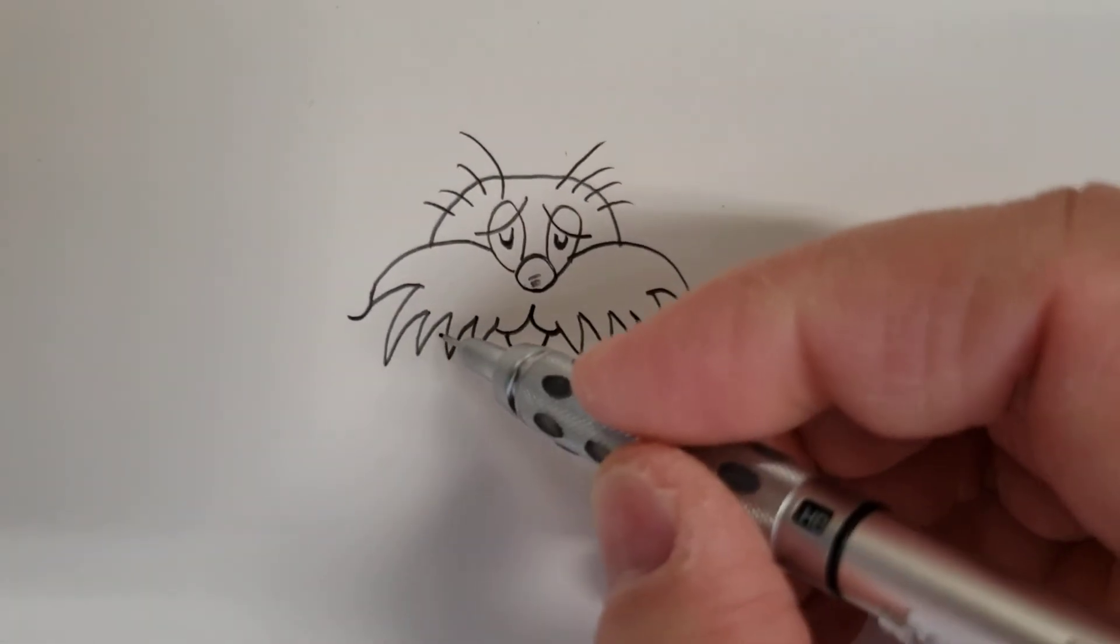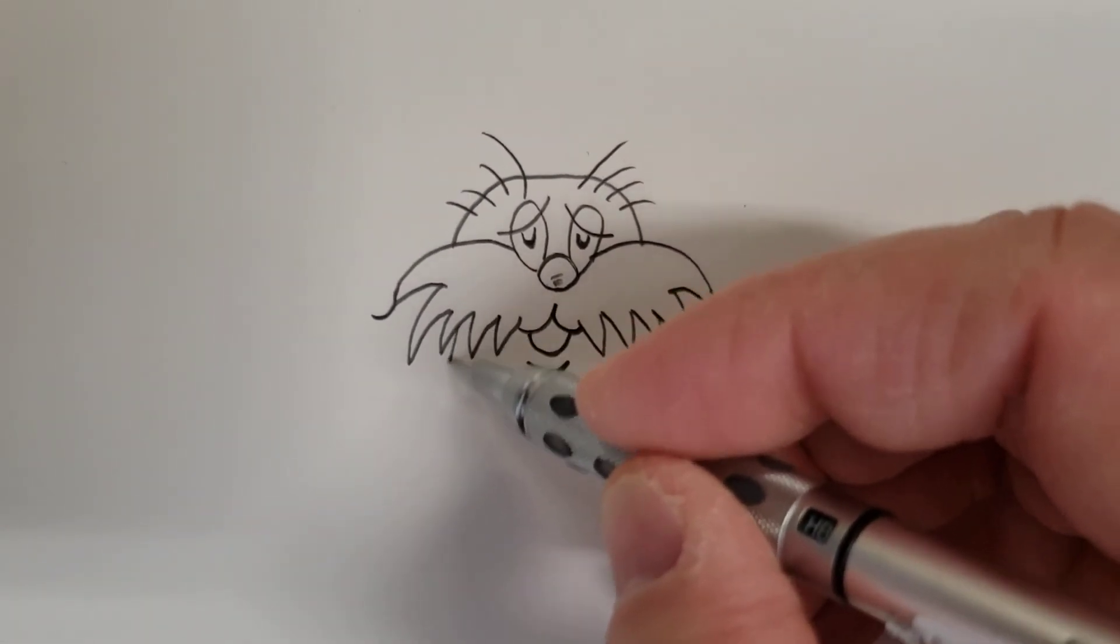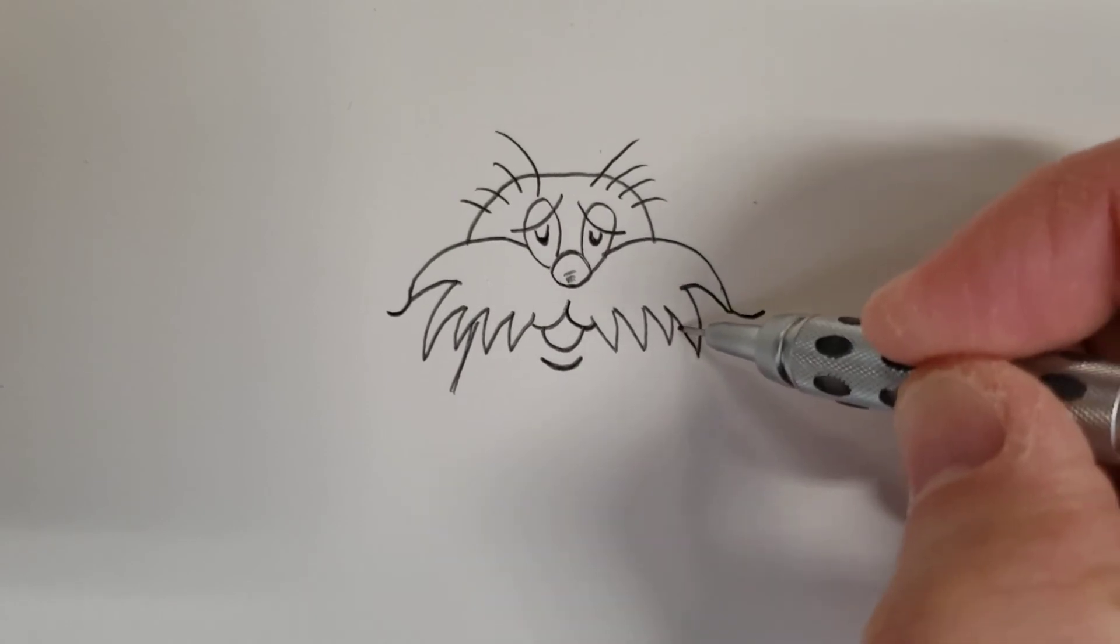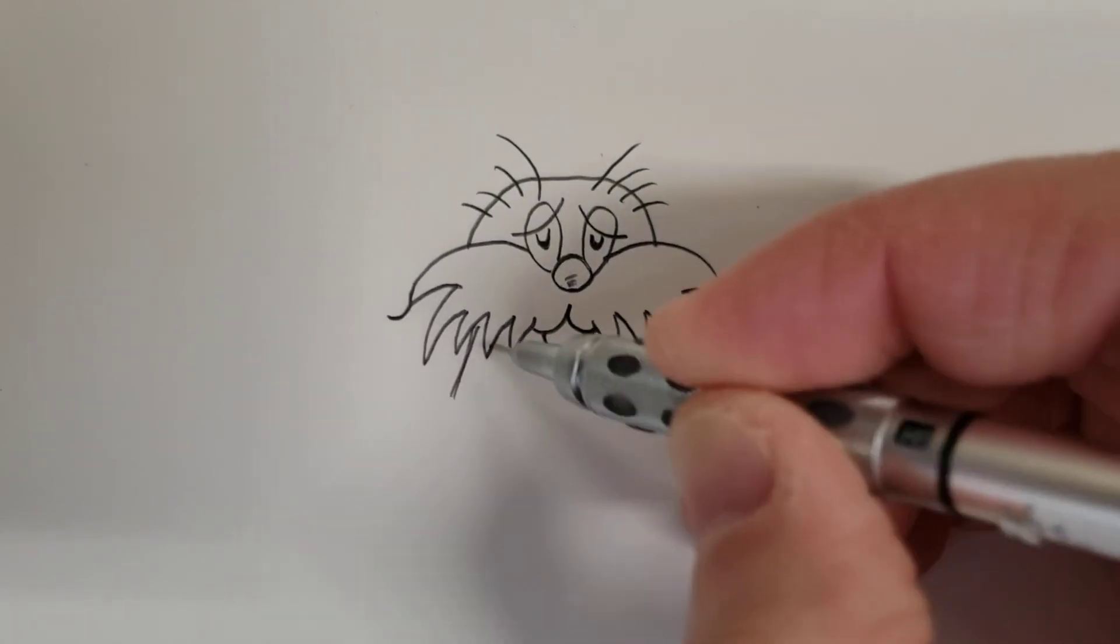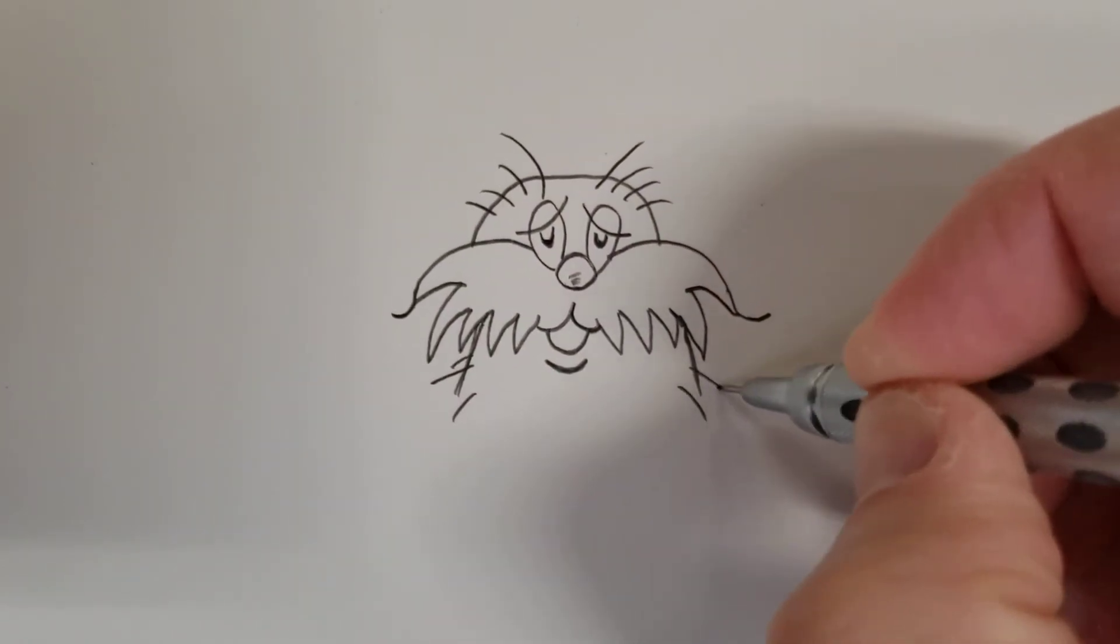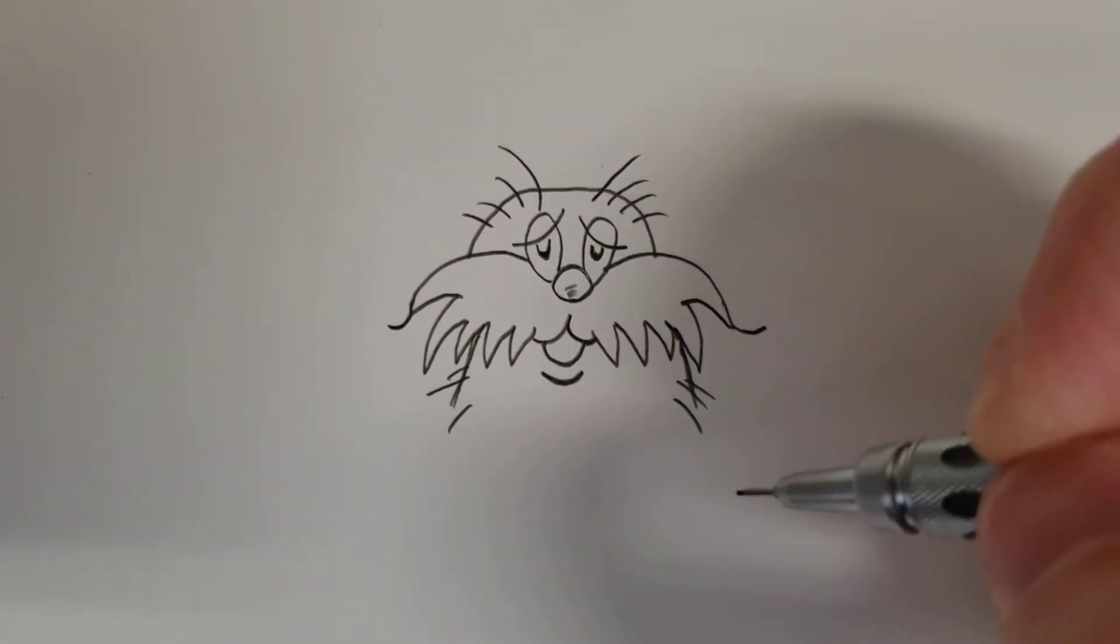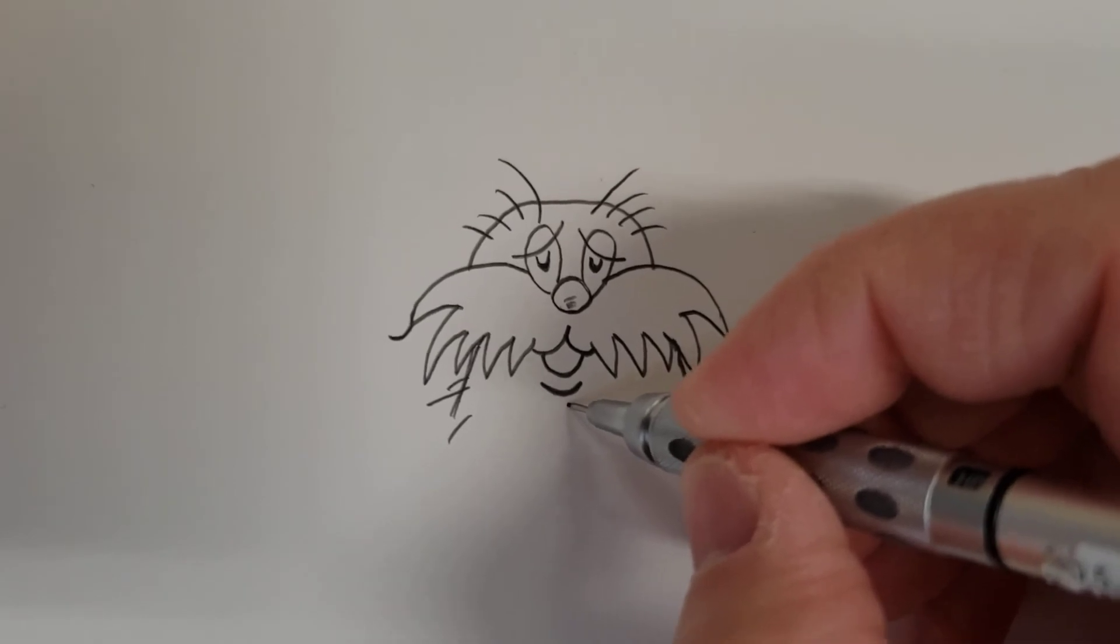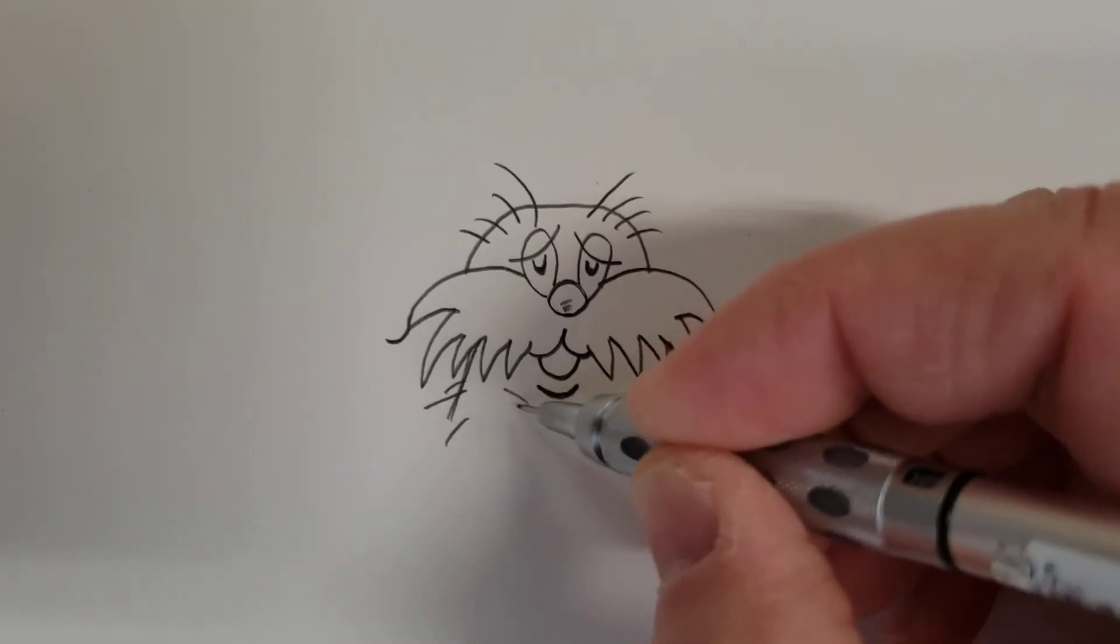Come down here and come down one, two like that. You can do a couple little hairs sticking out like that. Then we're going to come right here and do a couple more hairs by doing little lines.